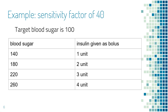Here is an example of what a sensitivity factor of 40 looks like. Assuming the target blood sugar on your pump is 100, then the pump will suggest one unit for a blood sugar of 140, two units for a blood sugar of 180, three units for a blood sugar of 220, and so on. It will suggest one additional unit of insulin for every 40 points of blood sugar above the target.